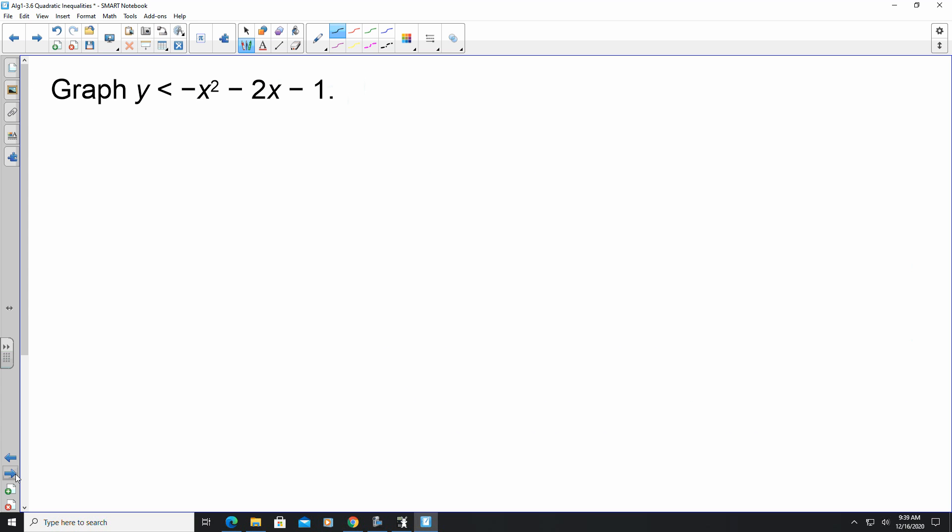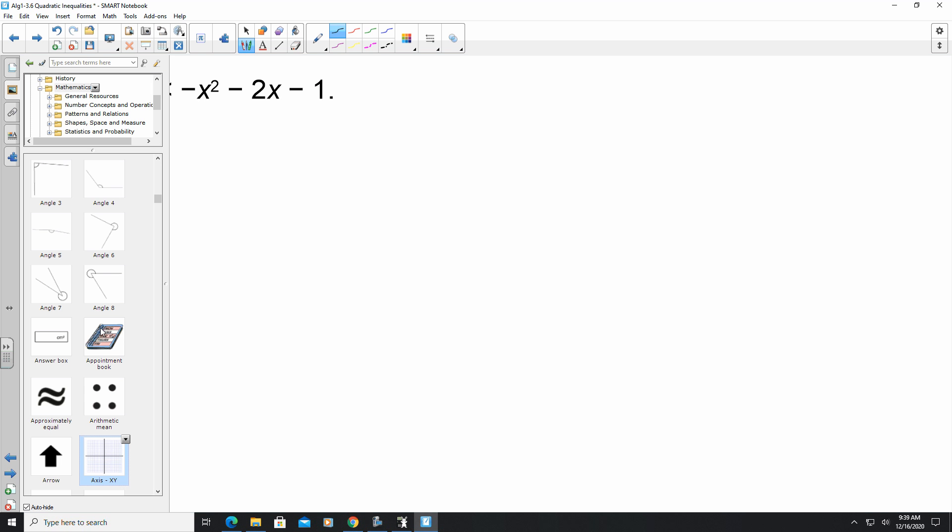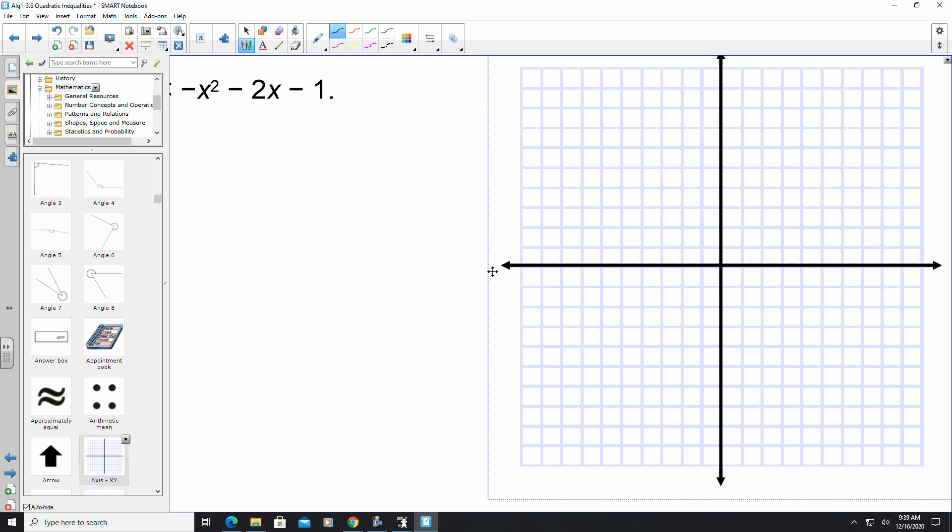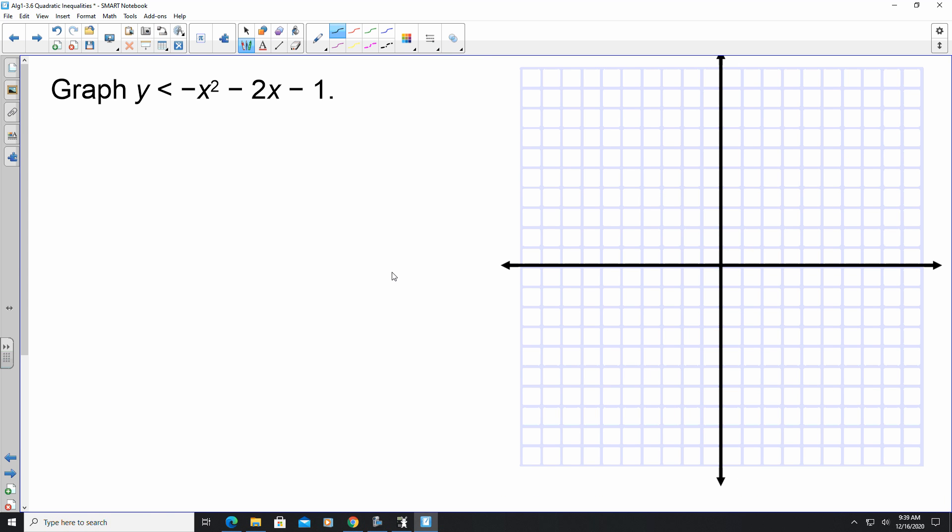So if we look here, it says they want us to graph y is less than negative x squared minus 2x minus 1. We're going to use all of our resources here. In this case, a is negative 1, b is negative 2, c is negative 1.